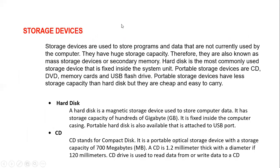If we talk about storage devices, they are used to store programs and data that are not currently used by the computer. They have huge storage capacity, therefore they are also known as mass storage devices or secondary memory. Hard disk is the most commonly used storage device that is fixed inside the system unit. Portable storage devices are CD, DVD, memory cards and USB flash drive. Portable storage devices have less storage capacity than hard disk but they are cheap and easy to get.